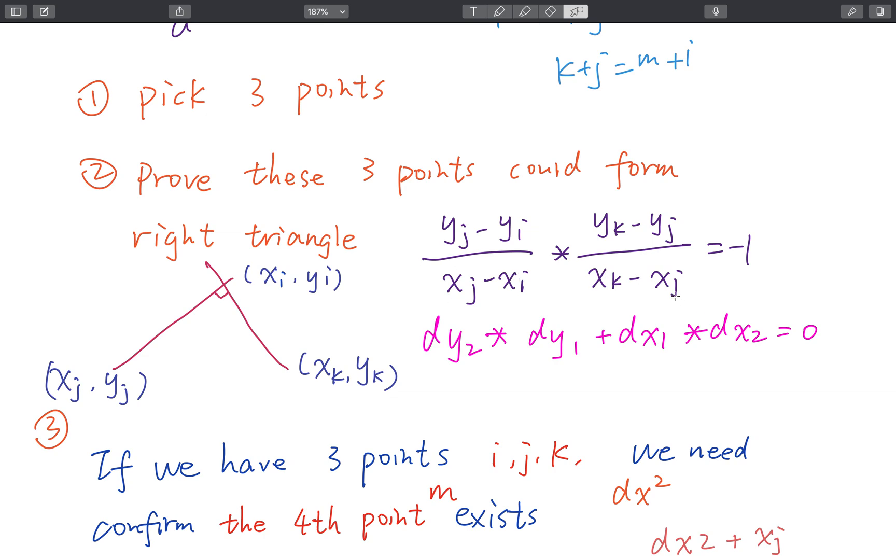Then we can get DY times DY1 plus DX1 times DX2 equal to 0. Because this is DX1, this is DX2. So we get this formula. We just check whether this part equal to 0. If it equal to 0, that means this place is 90 degrees. Otherwise, we just continue, try to find the three points that can form a 90 degree.